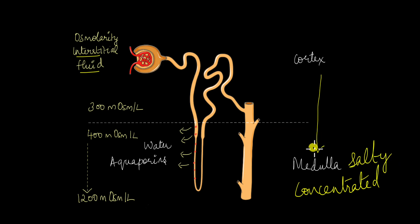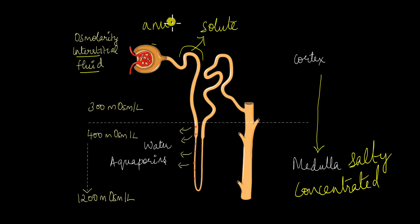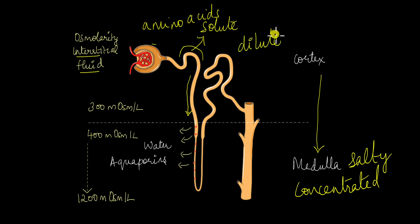This means that the medulla is highly concentrated with solutes, and because those solutes are most often electrolytes, we can say that the medulla is very salty in nature. To understand why this matters, let's follow the journey of the filtrate once it leaves Bowman's capsule and reaches the proximal convoluted tubule. At the PCT, a lot of solutes like glucose, amino acids, and other essential nutrients are reabsorbed into the interstitial space, so what enters the descending limb of the loop of Henle is actually a dilute urine.